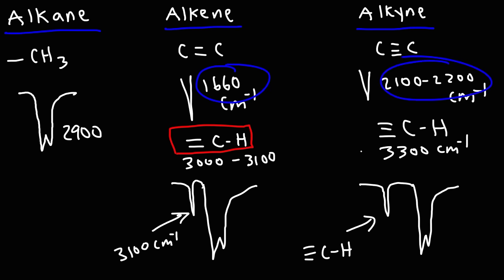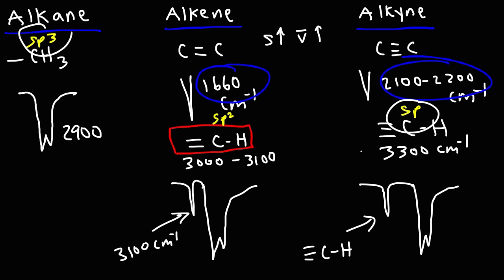Let's talk about the effect of hybridization on wavenumber. We have an sp3 CH stretch, an sp2 CH stretch, and an sp CH stretch. Notice that as the s-character increases, the wavenumber increases. The sp CH stretch is 50% s, 50% p; sp2 is 25% s, 75% p. As the s-character increases, the wavenumber of the CH stretch goes up.